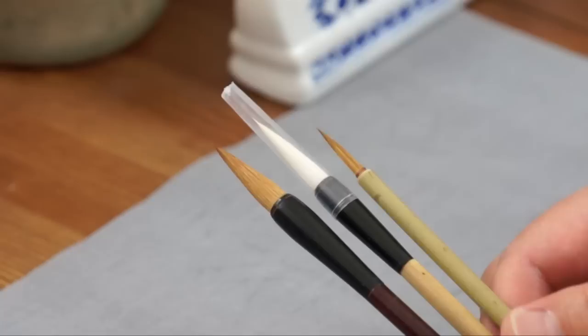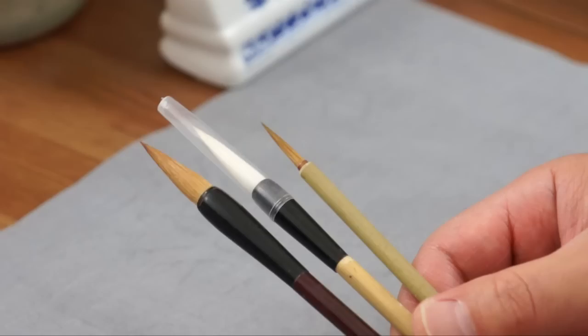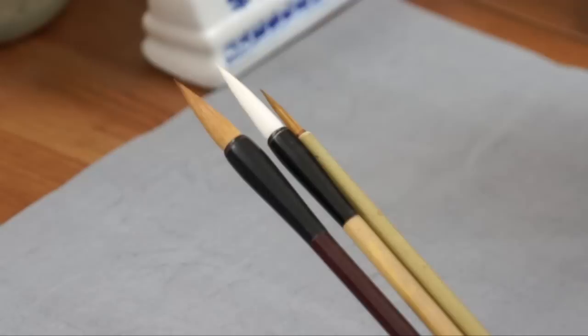We call it the set of basic three brushes for Chinese painting. The first one is a small weasel hair brush. It is used for details and lining.